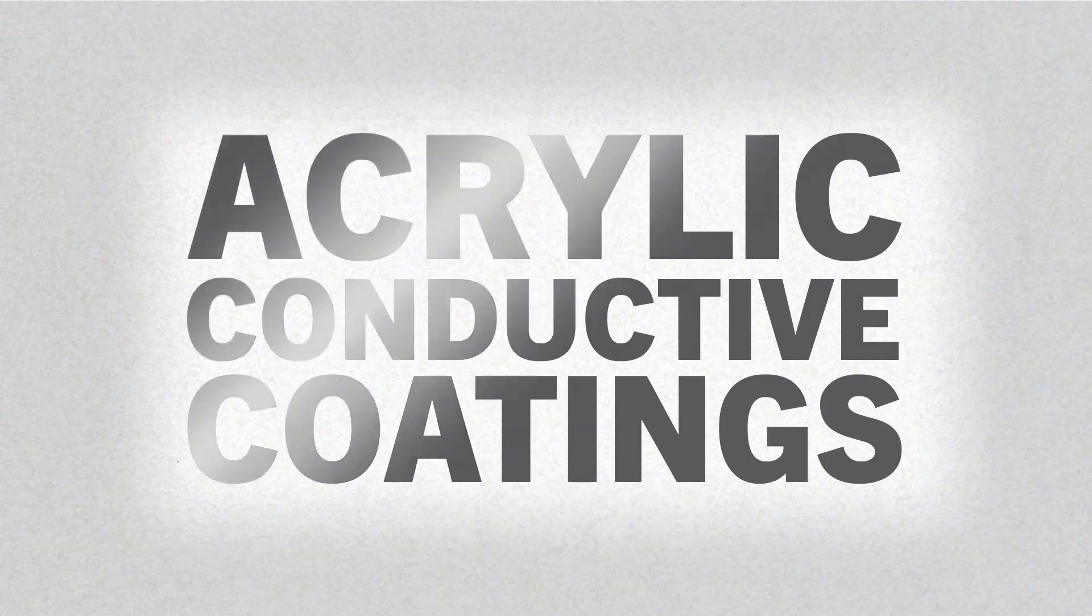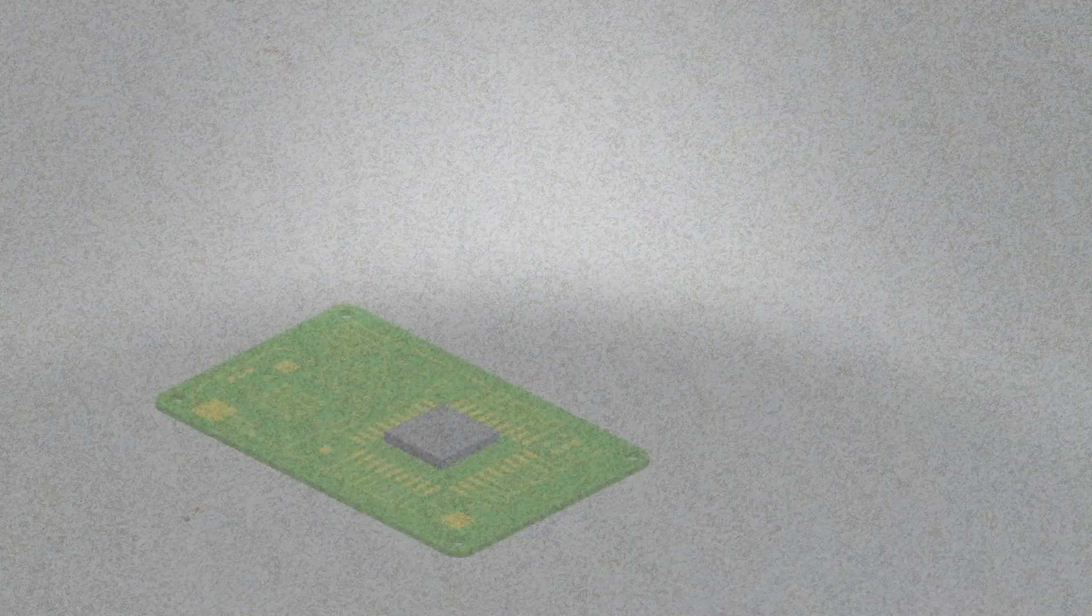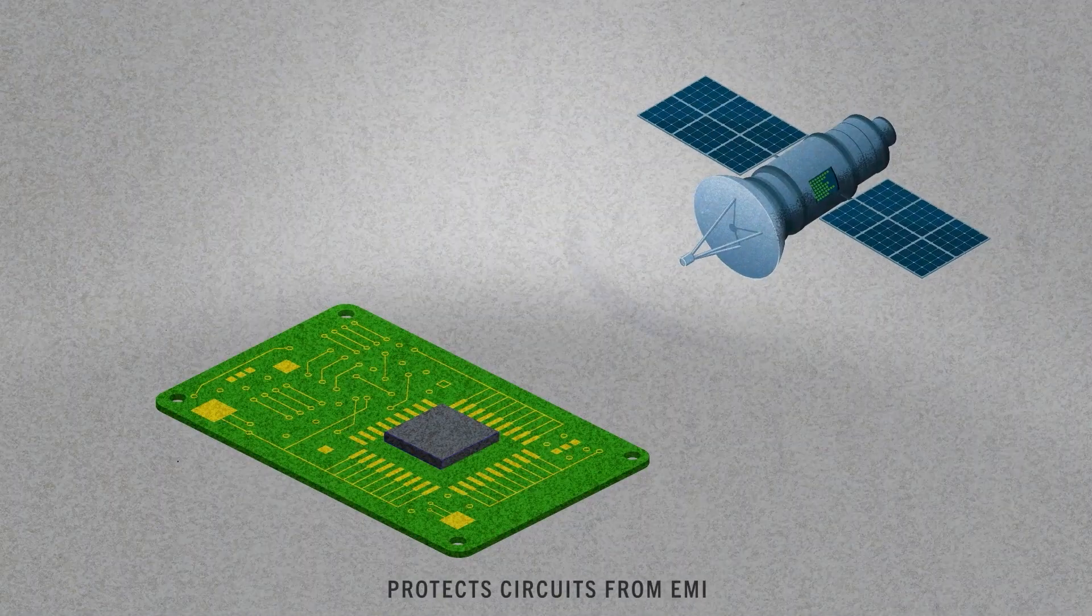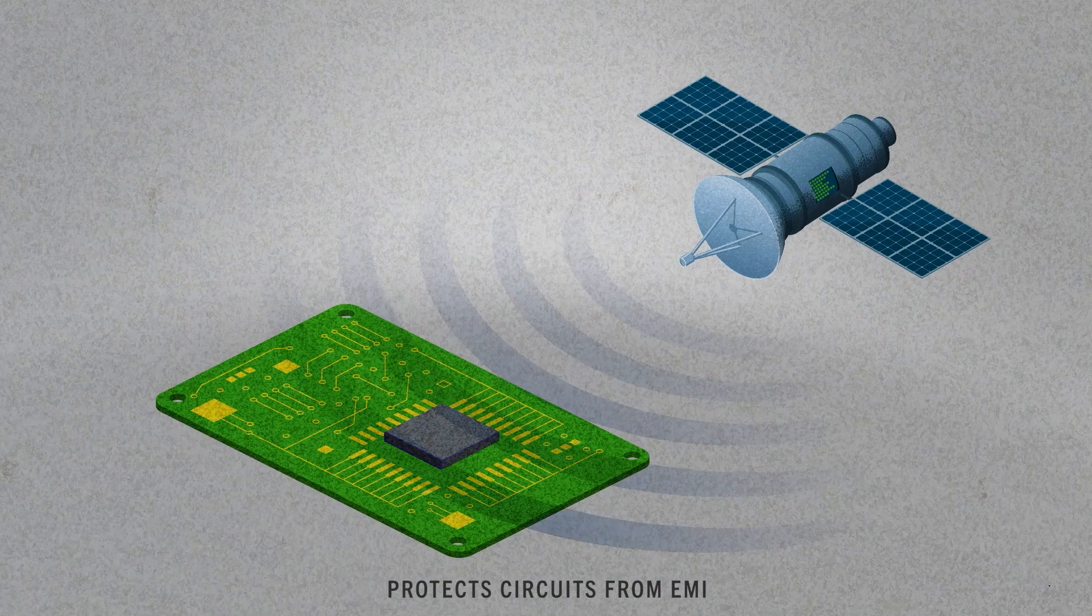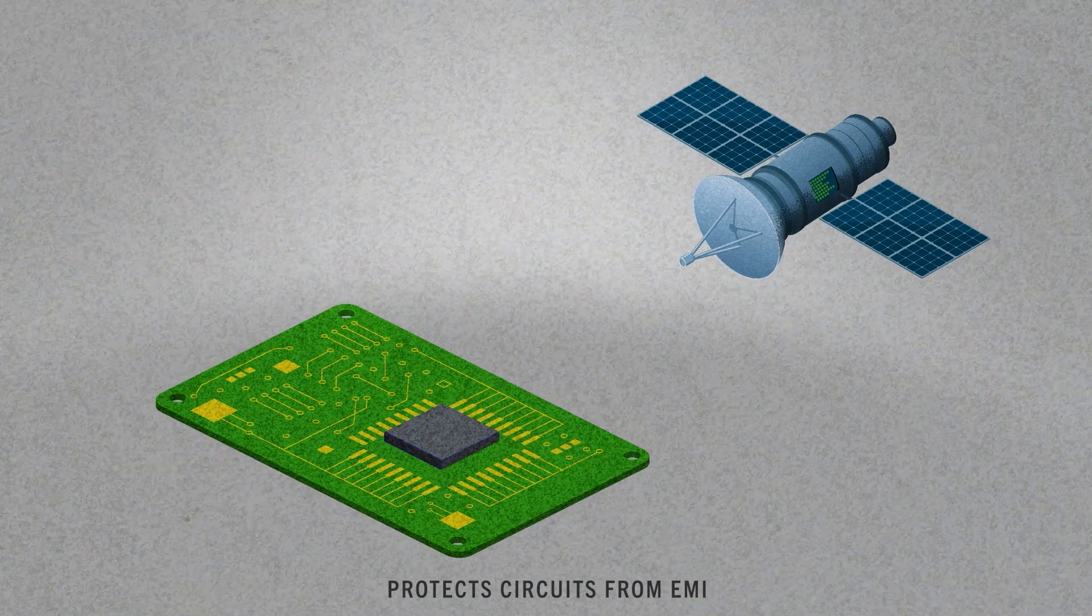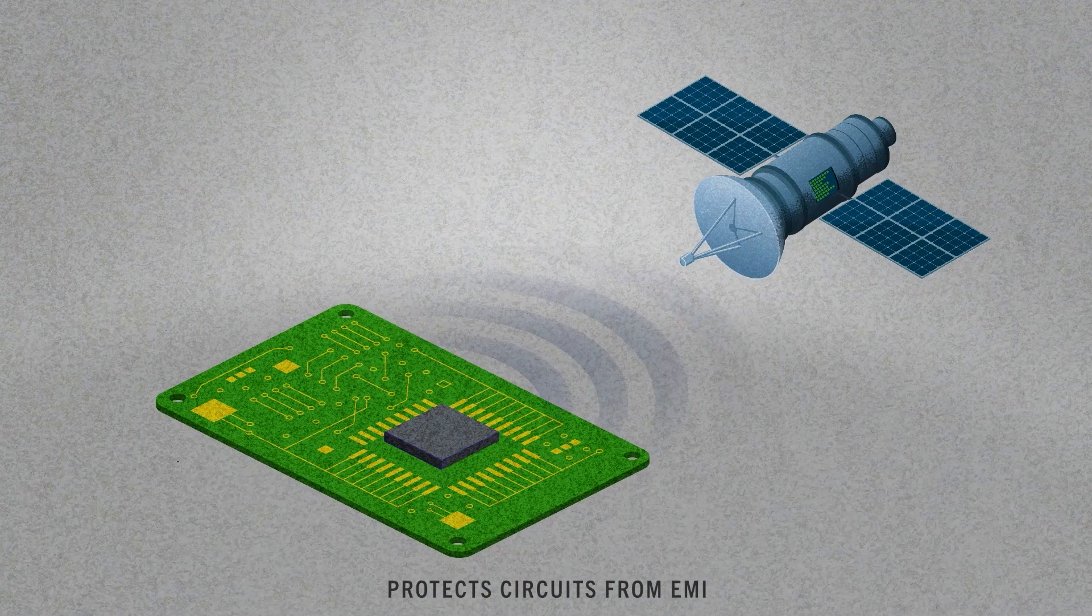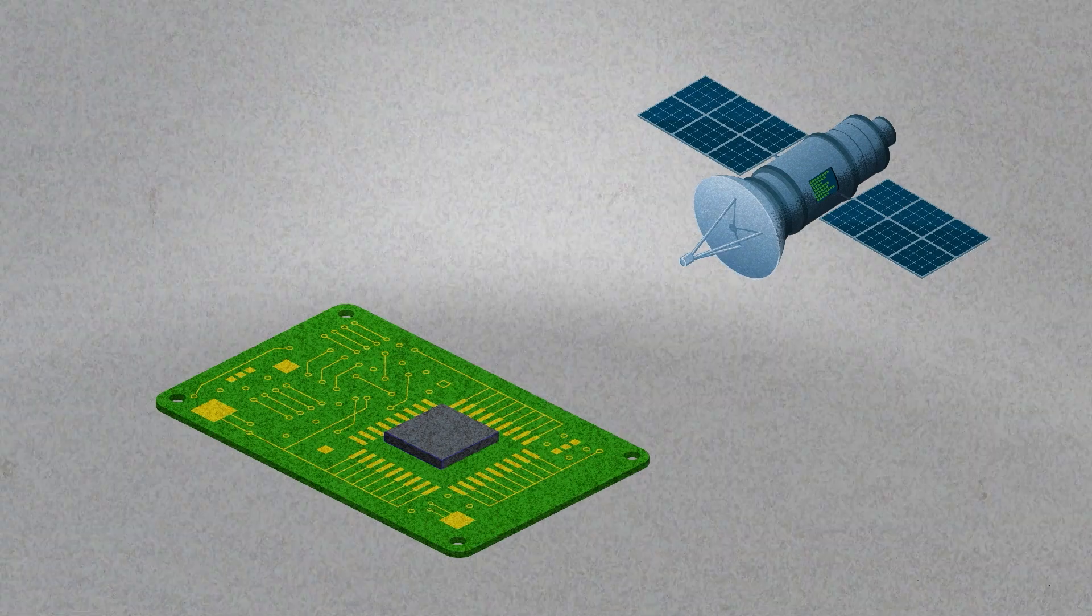Acrylic conductive coatings are used to protect printed circuit boards from electromagnetic interference emitted by neighboring devices. These coatings also contain electromagnetic radiation from the PCB so it does not interfere with any nearby devices.